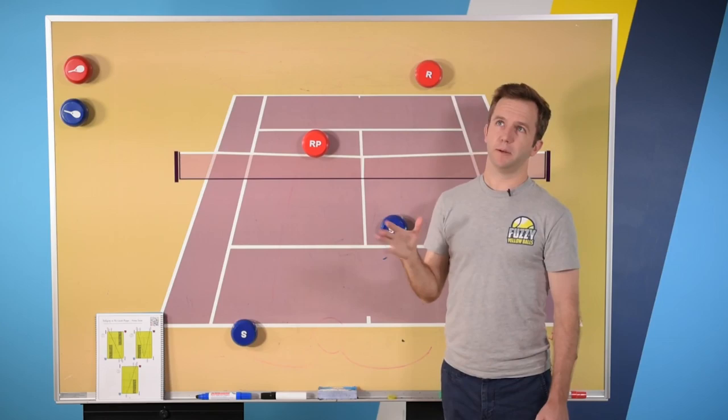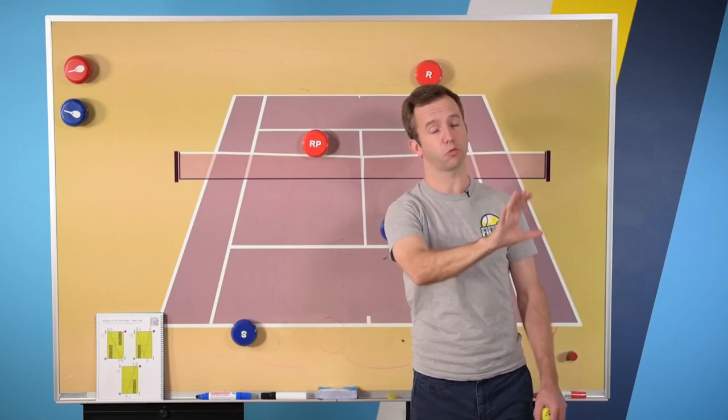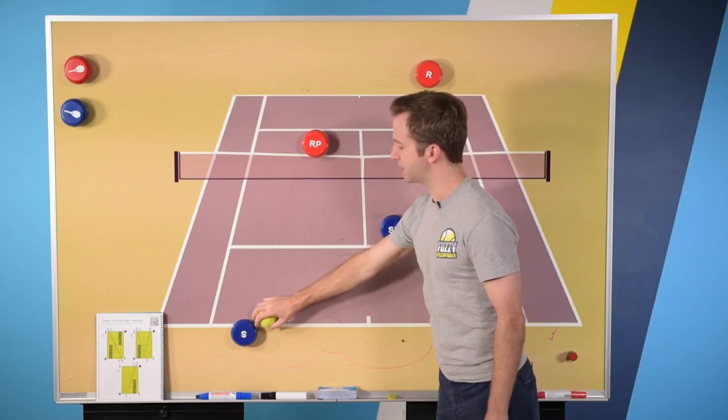So one way to think about it is you hit your ground stroke even higher, or you hit like a low lob. Like you're not trying to actually clear this person necessarily, you just want to force them to hit a high backhand volley, like really high backhand volley, or high backhand overhead.